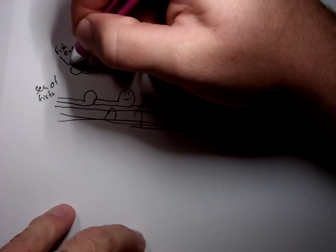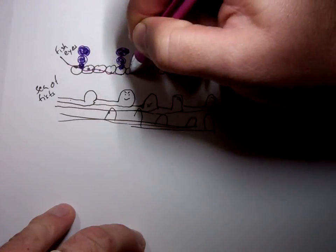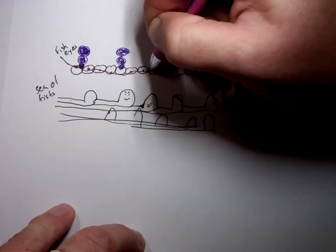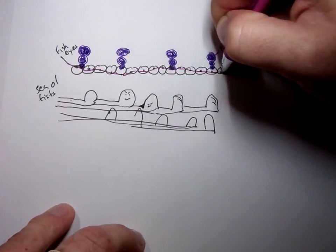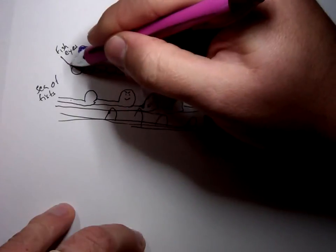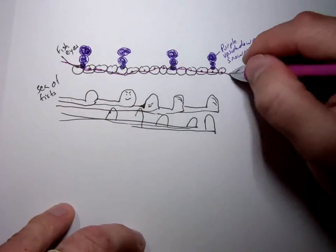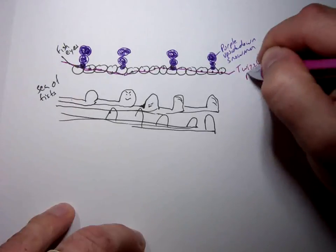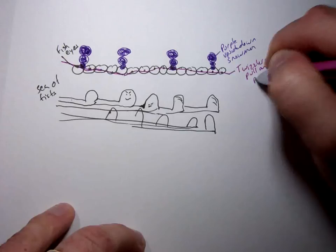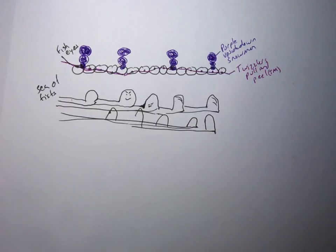if we cover the fish eyes up with a Twizzlers pull and peel, the sea of fists doesn't want to have anything to do with it whatsoever. So, what did I say this was? Twizzlers pull and peel. I'm sure that this is a trademark, so I'll do that there. Make sure that I don't break any laws.